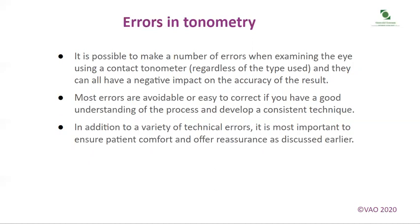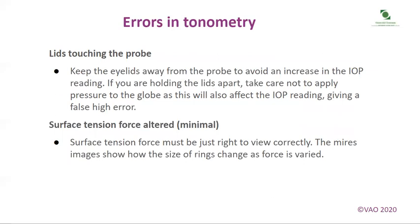Errors in tonometry: it is possible to make a number of errors when examining the eye using a contact tonometer, all of which can negatively impact accuracy. Most errors are avoidable with a good understanding of the process and a consistent technique. It is most important to ensure patient comfort and reassurance. Keep the eyelids away from the probe to avoid an increase in IOP reading. If holding the lids apart, take care not to apply pressure to the globe, as this will give a false high reading.